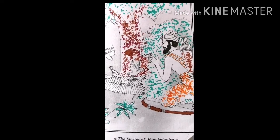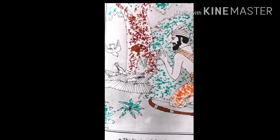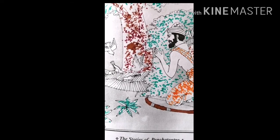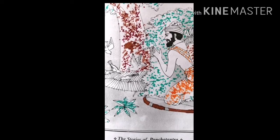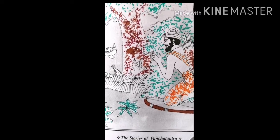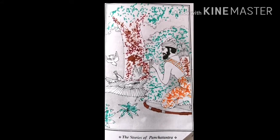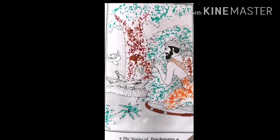The doves saw the fowler coming towards them. However, the king of doves, who was very clever, said to other doves, Friends, the fowler is coming. I have an idea. We must do something immediately to free ourselves from the clutches of the fowler.